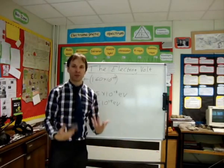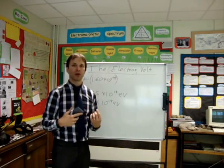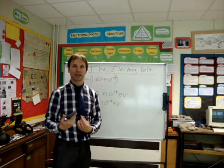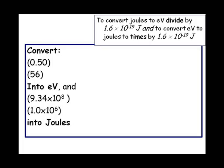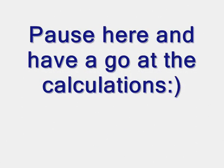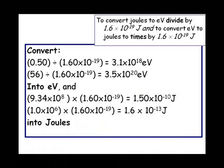If you've got a number in electron volts and you're trying to convert into joules, then you're going to get a really small number. Okay, here are a few more. I want you to try these out and see if you get the right answer. I'll see you later. Bye.